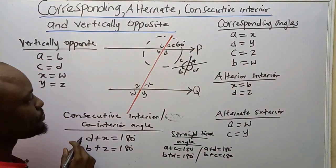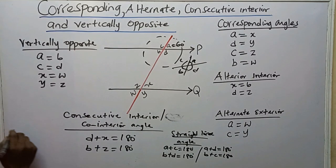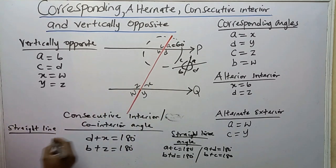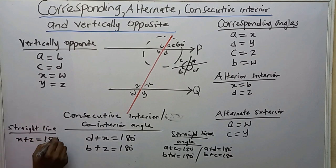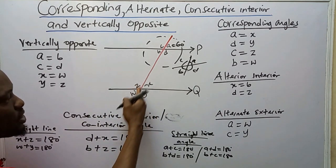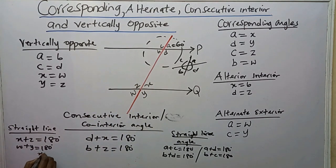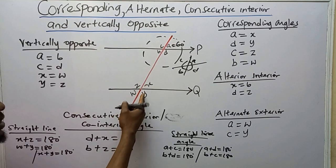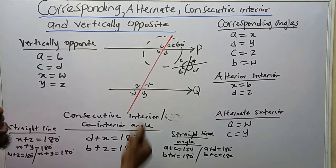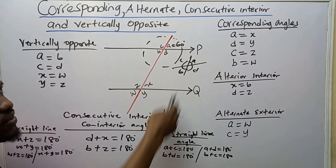Looking at the other side, X plus Z equals 180 degrees. W plus Y on the straight line also equals 180 degrees. We can also see that X plus Y equals 180 degrees, and W plus Z is also 180 degrees. The sum of angles on a straight line is 180 degrees, and you can solve problems using these different angle relationships.